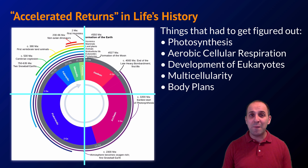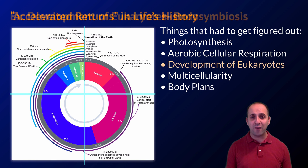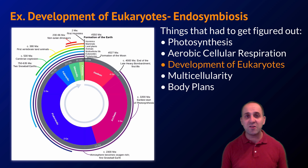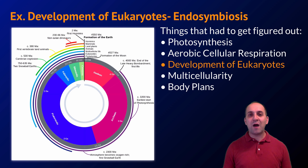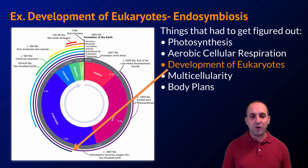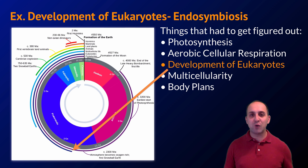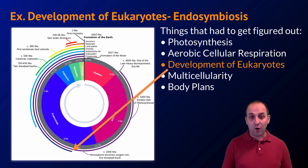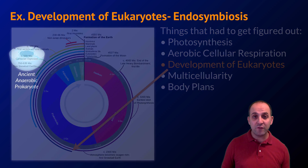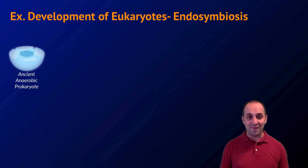We could look at each of these steps, but I want to focus on just one: the development of eukaryotes, a process referred to as endosymbiosis. This process occurred somewhere around two billion years ago, transitioning from prokaryotic cells — cells without internal membrane-bound organelles — to eukaryotic cells, a really important milestone in the history of life on Earth.